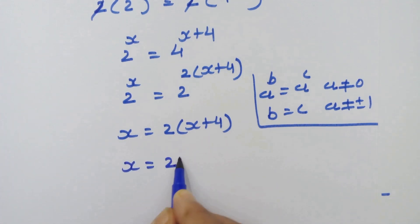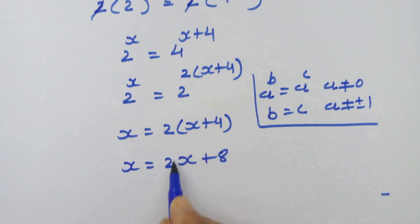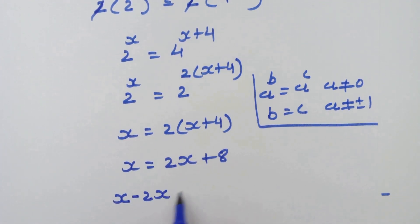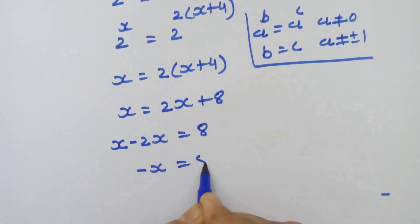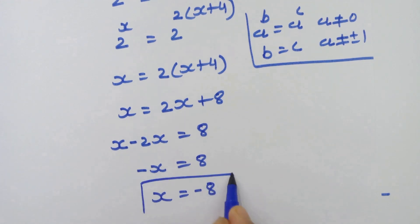Here we can equate the exponents, so we have x is equal to 2 into x plus 4. Let's open this bracket: x is equal to 2x plus 8. Moving 2x to the left hand side: x minus 2x is equal to 8, so minus x equals 8, therefore x is equal to minus 8.